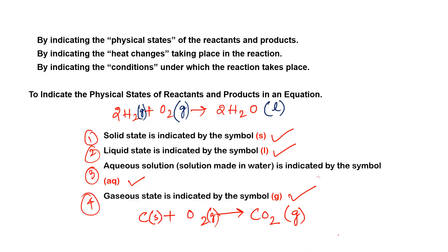Hello everyone. This is the second part of the chemistry revision video. Here we are going to understand from the physical state how to indicate the physical state of a chemical reaction. We have to understand how to indicate the physical state of reactants and products, because whenever you are writing down a chemical reaction, you have to make it more informative.